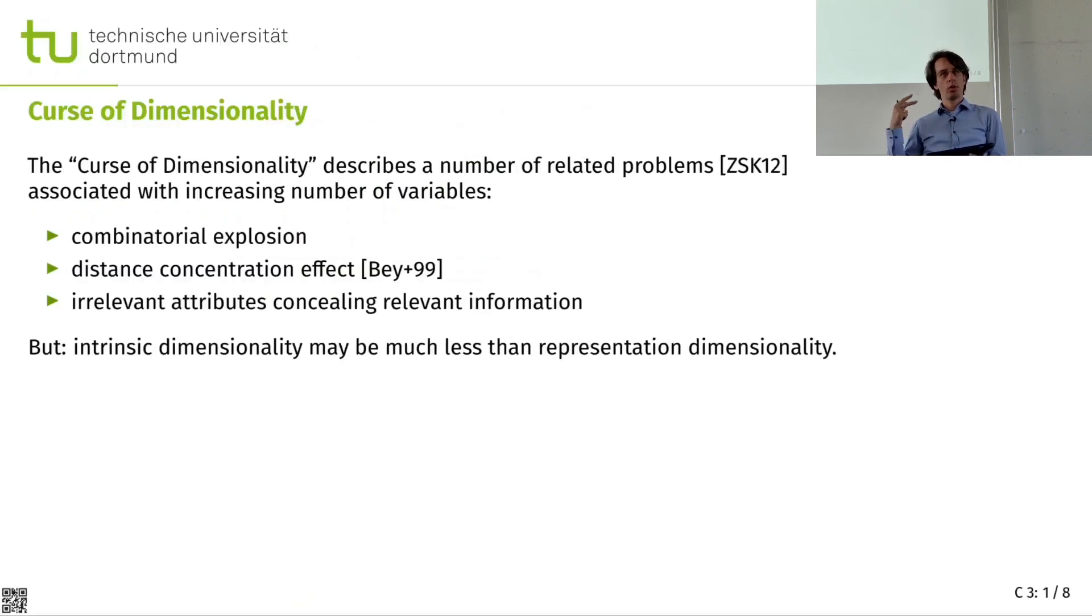It means that a lot of our intuition from low dimensional space about distance in particular tends to be wrong. So something that may sound like a good idea at first sight may turn out to be not very feasible when you try to do it in real high dimensional data.